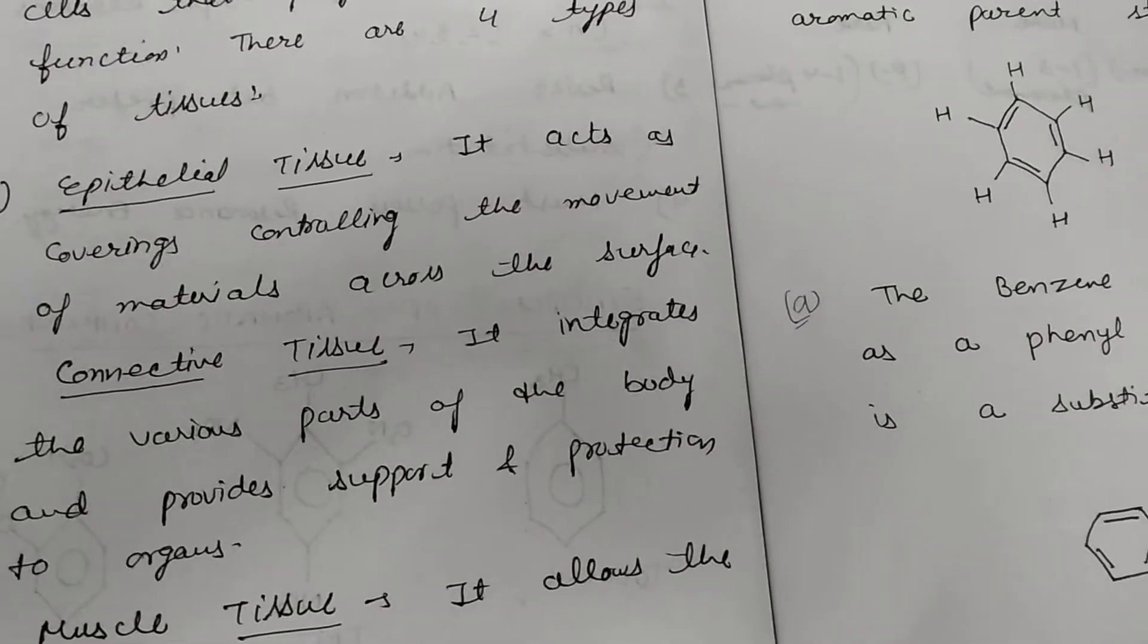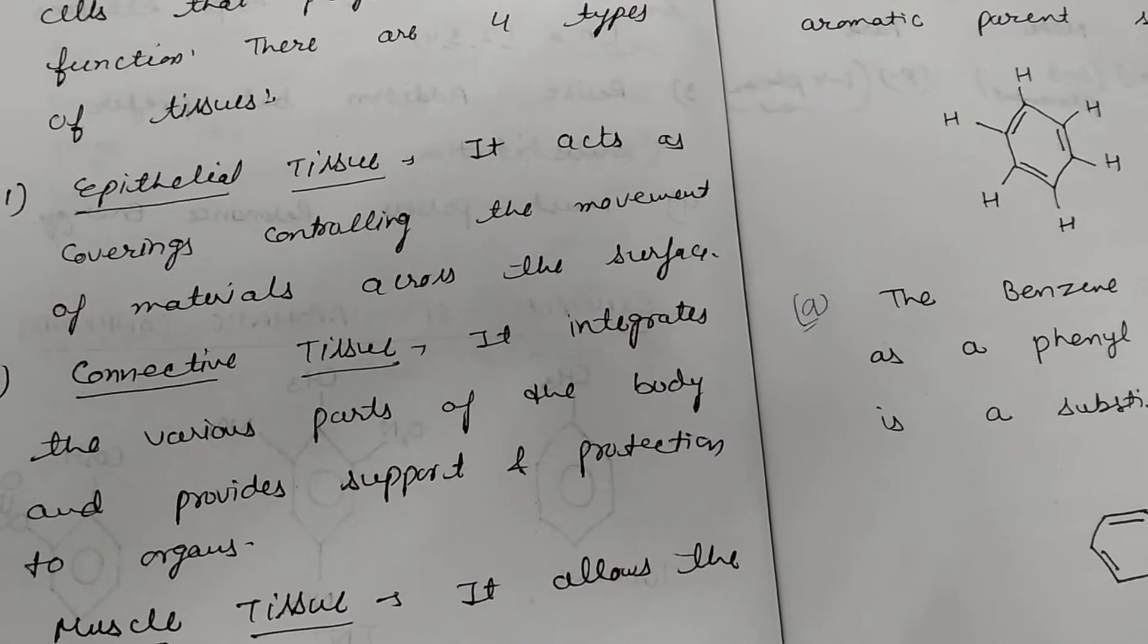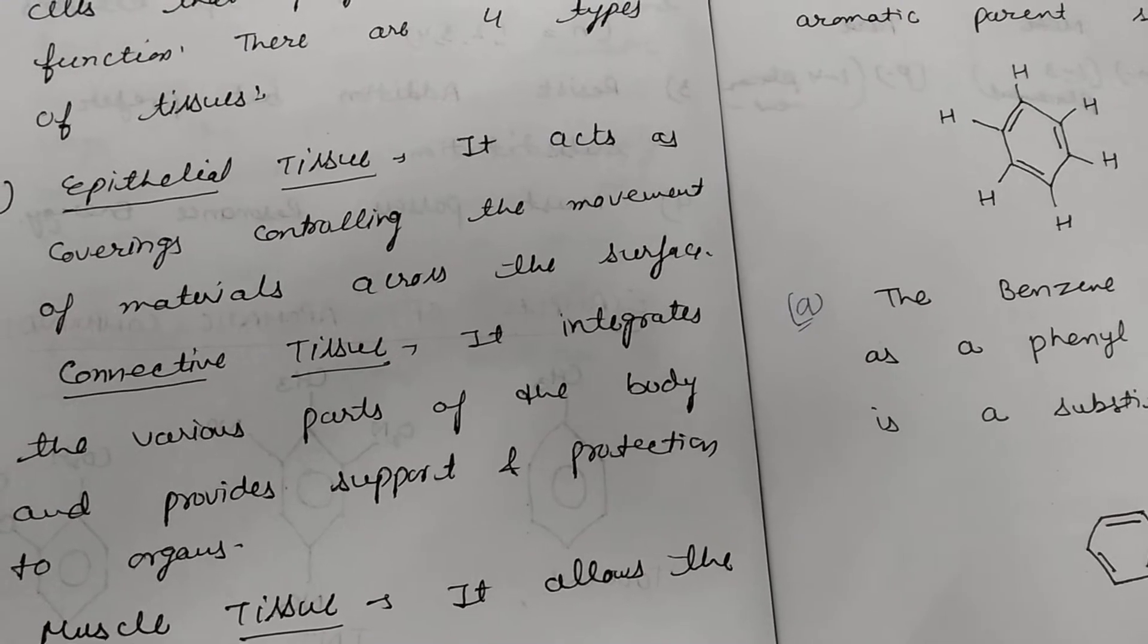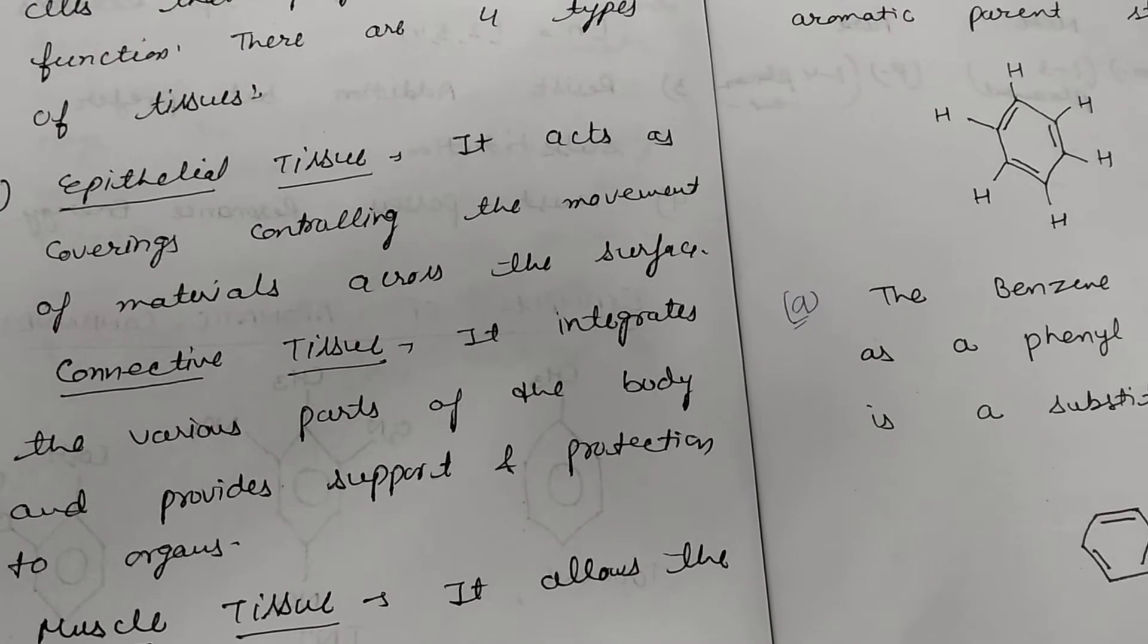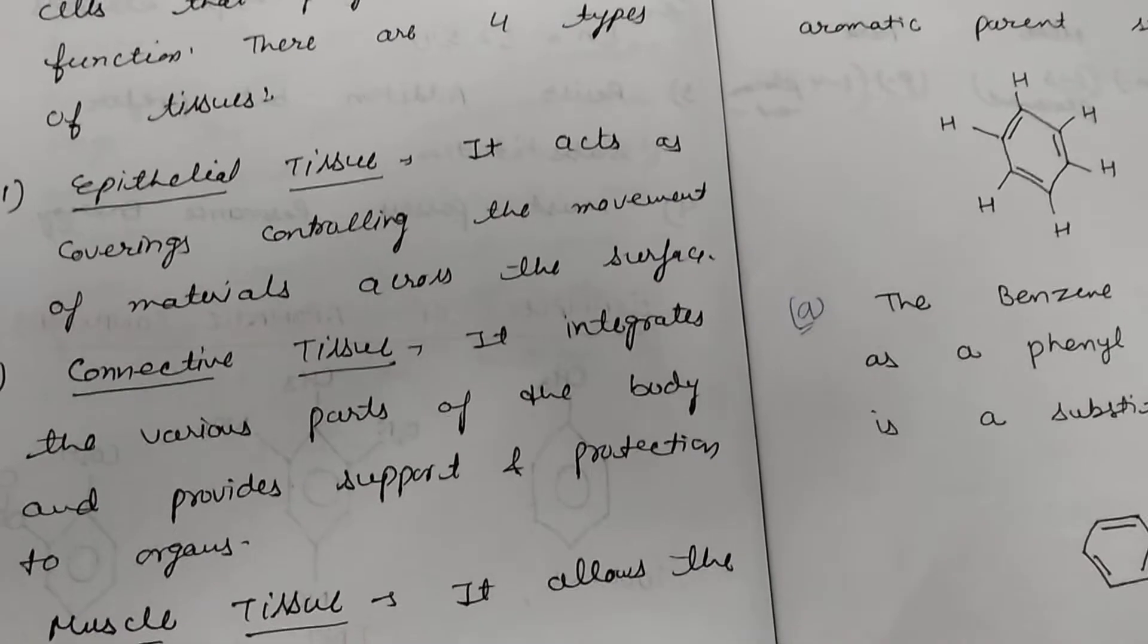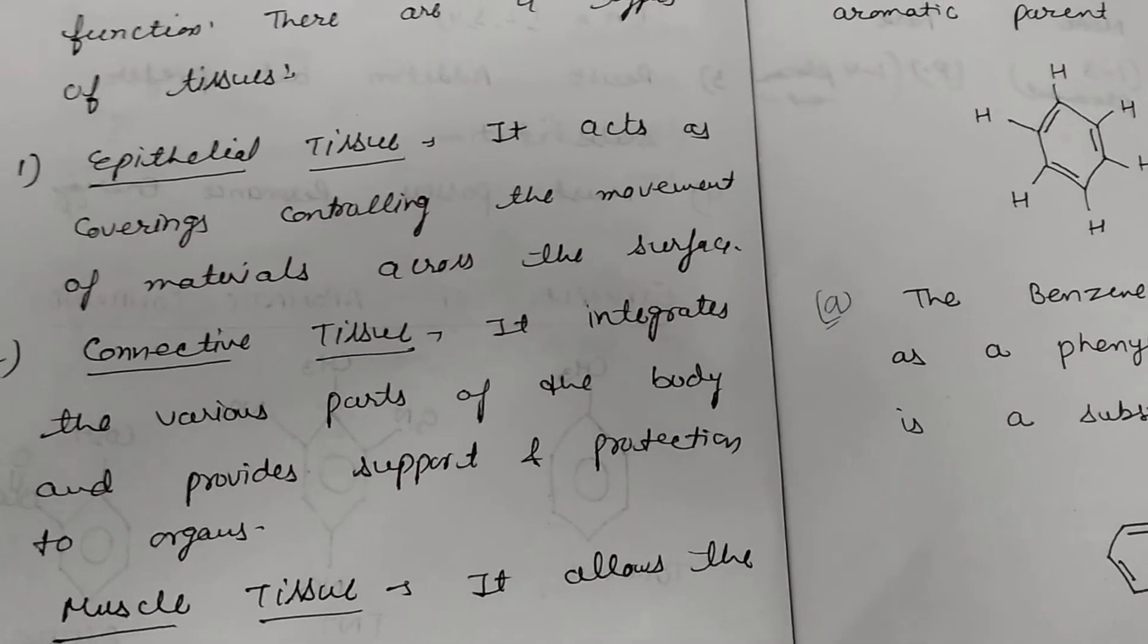The first tissue is epithelial tissue. It acts as a covering, controlling the movement of material across the surface. What does it mean? If any body has material, any movement of any body part is the movement of its coverings.